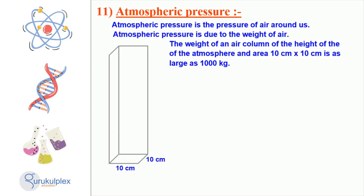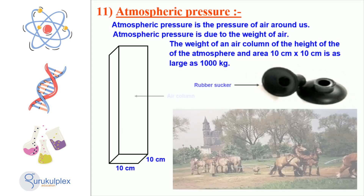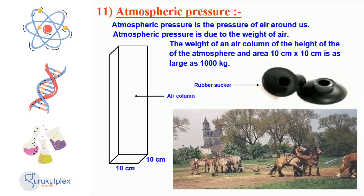Atmospheric pressure is caused by the weight of the air. The Magdeburg experiment demonstrated that a 10 cm x 10 cm air column weighed the equivalent of 1,000 kg. This remarkable physical phenomenon encourages us to further explore our atmosphere and how it affects the environment. The Magdeburg experiment was created by the...